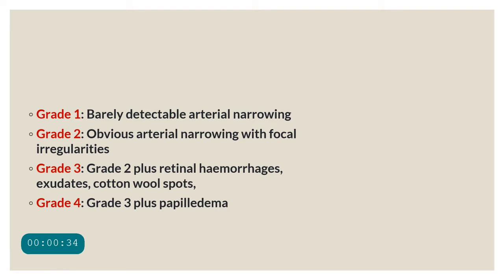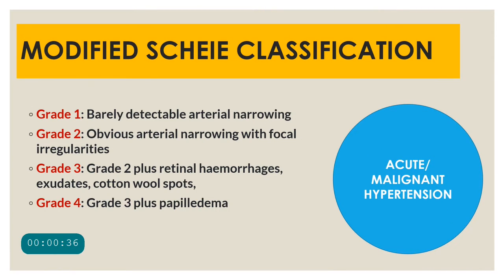The first classification we will study is the modified Sheils classification. This modified Sheils classification is given specifically for acute or malignant hypertension. In my video on hypertensive retinopathy pathology and clinical science, I explained the changes that occur in malignant hypertension, and considering all those changes, the modified Sheils classification was designed.